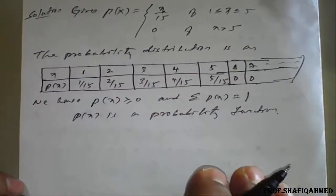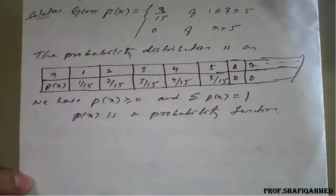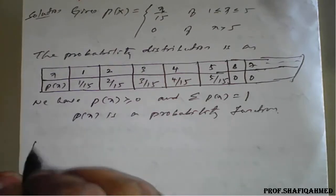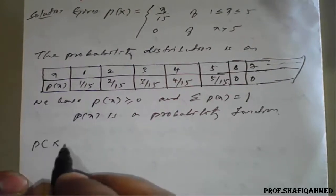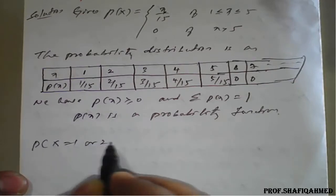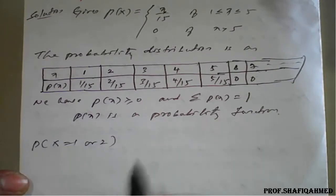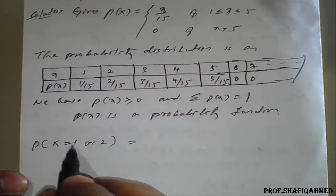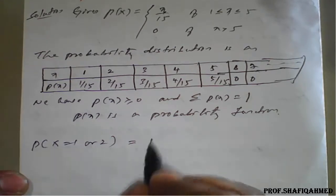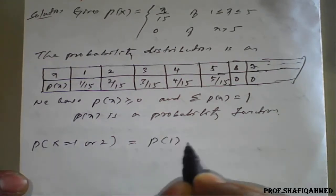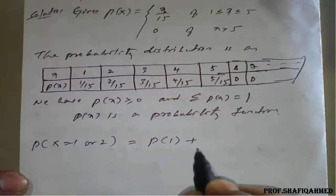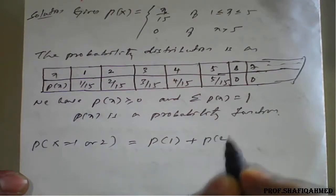Once we got this, then we will go for what they have asked. They have asked to find P of X is equal to 1 or 2. What happens here? P of X is equal to 1 or 2 means P of 1 plus P of 2.